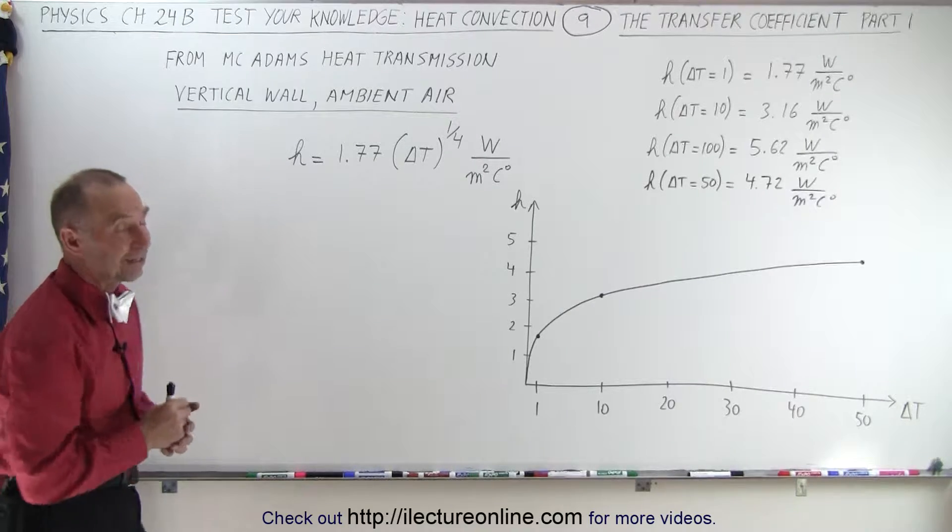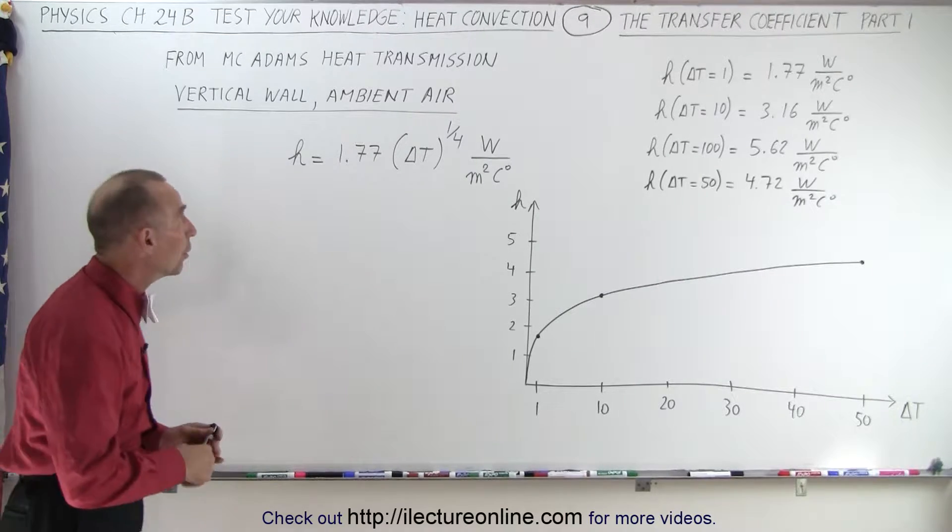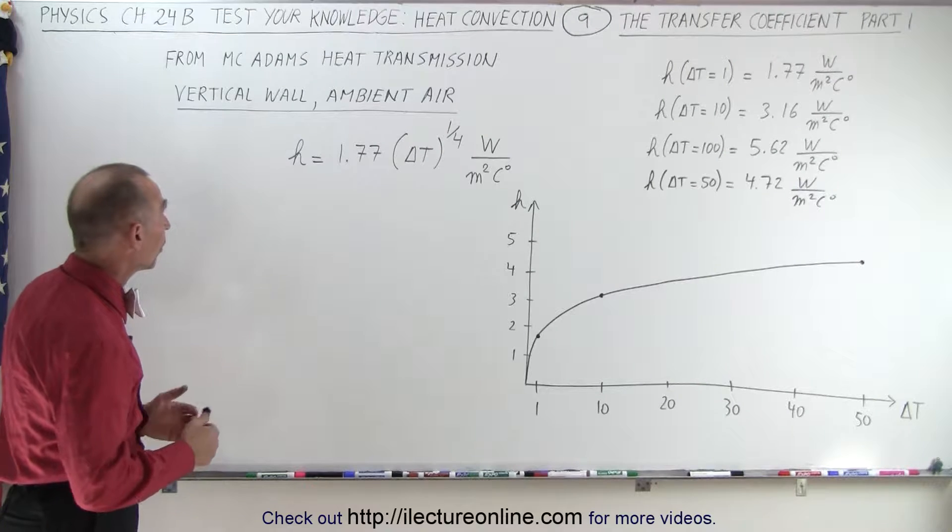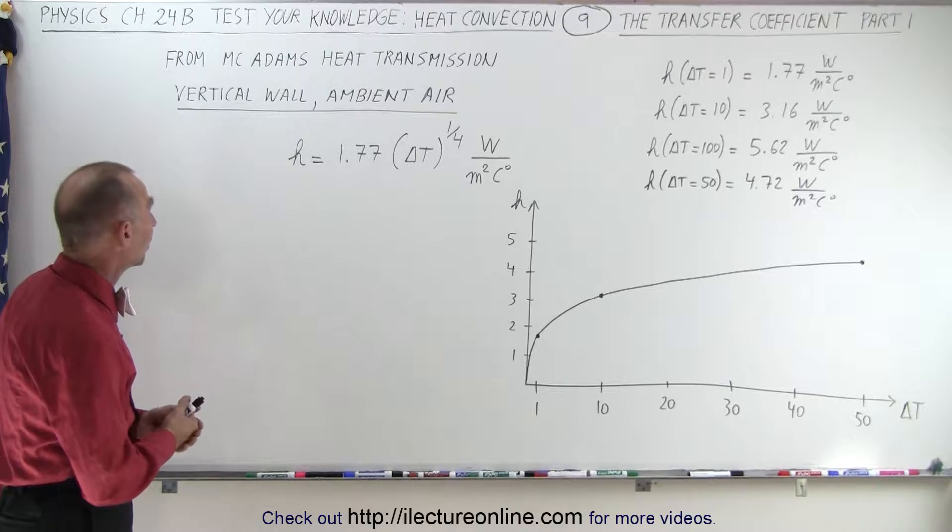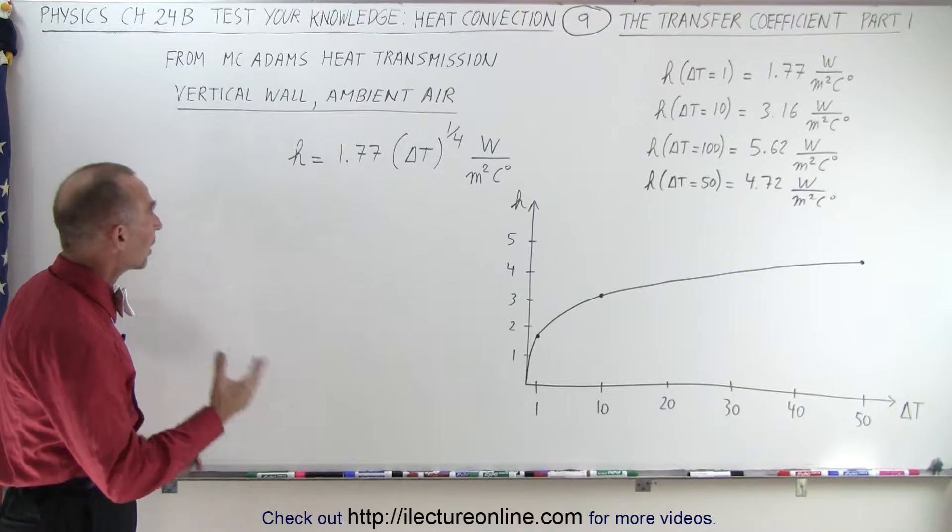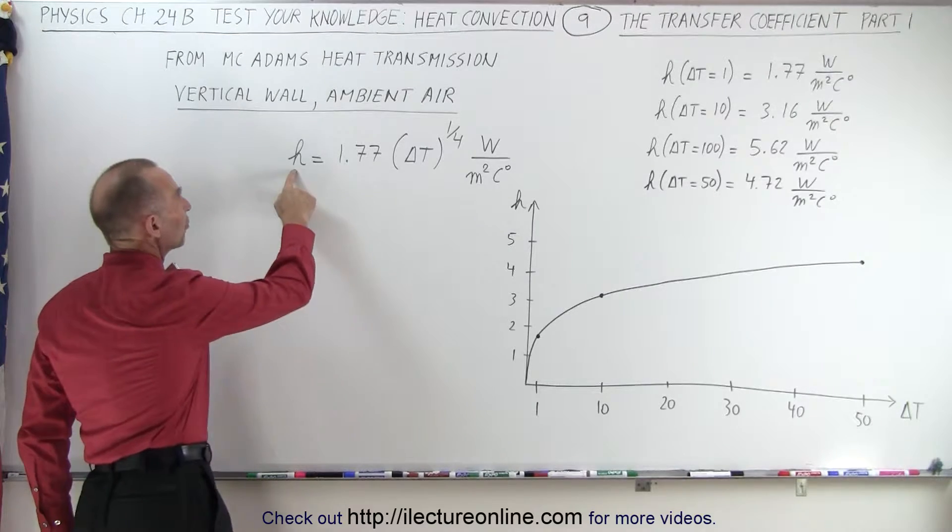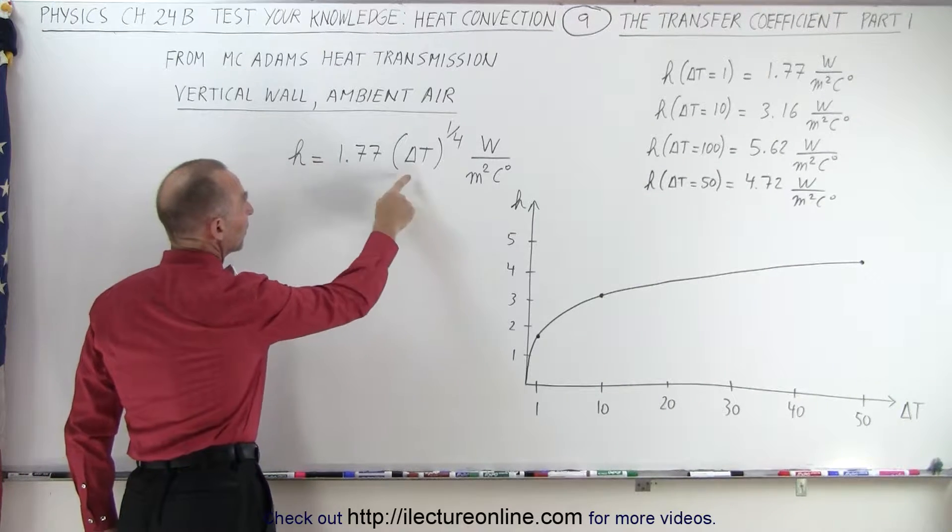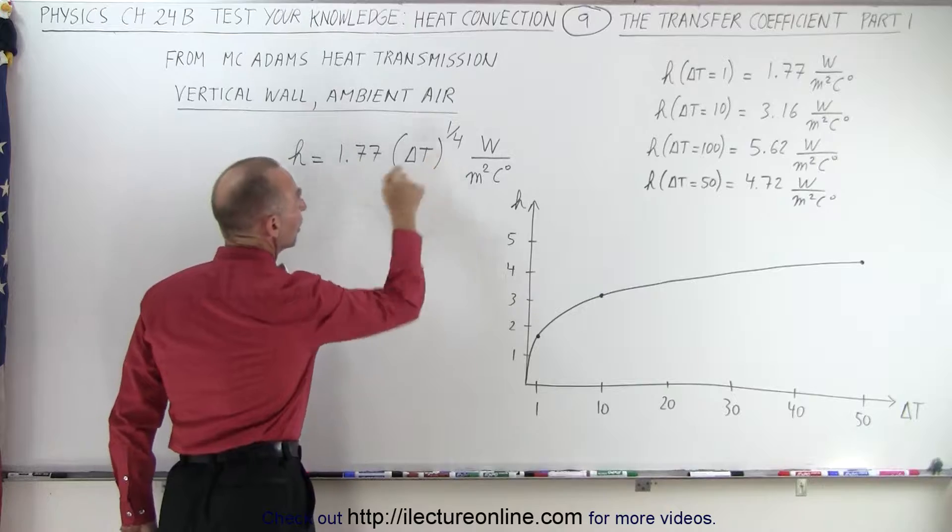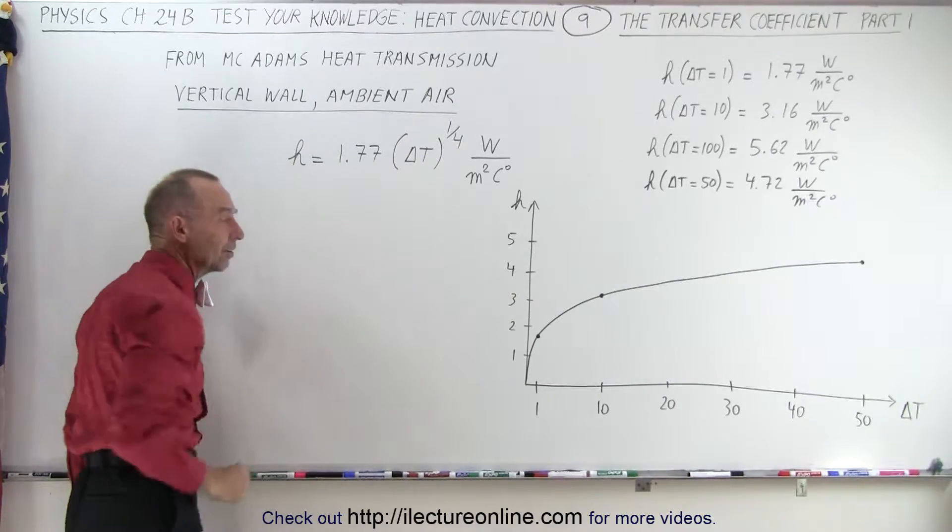Now if we go back to a very good text written a very long time ago by McAdams called McAdams Heat Transmission, he came up with a concept that the transmission coefficient depended upon the delta T to the one-fourth power times a constant.